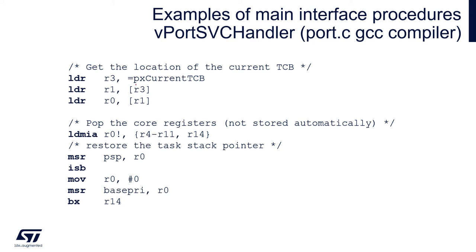Then it needs to take R4 to R11 and R14 core registers from this task stack to recover its last state before it was moved from run mode. At the end of this operation, the scheduler stores the updated stack pointer into the process stack pointer. Then it needs to enable all interrupts related to the operating system by storing 0 into the BASEPRI register, effectively disabling this mask register. The last step is to execute the selected task code.